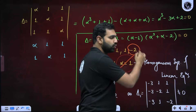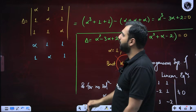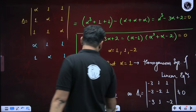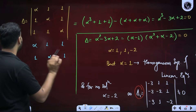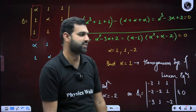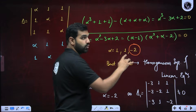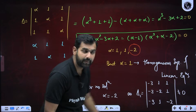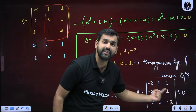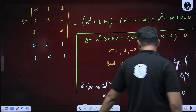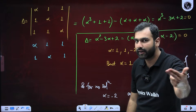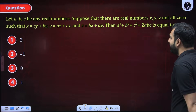With alpha = 1 discarded, can alpha be -2? To verify no solution, we need at least one of delta1, delta2, delta3 to be non-zero. Finding delta1 — replacing the x-coefficients with the constant term (alpha - 1 = -3): the determinant with column [-3,-3,-3] and the other two columns intact. Expanding gives a non-zero value. So delta = 0 and delta1 ≠ 0, confirming the system has no solutions for alpha = -2.